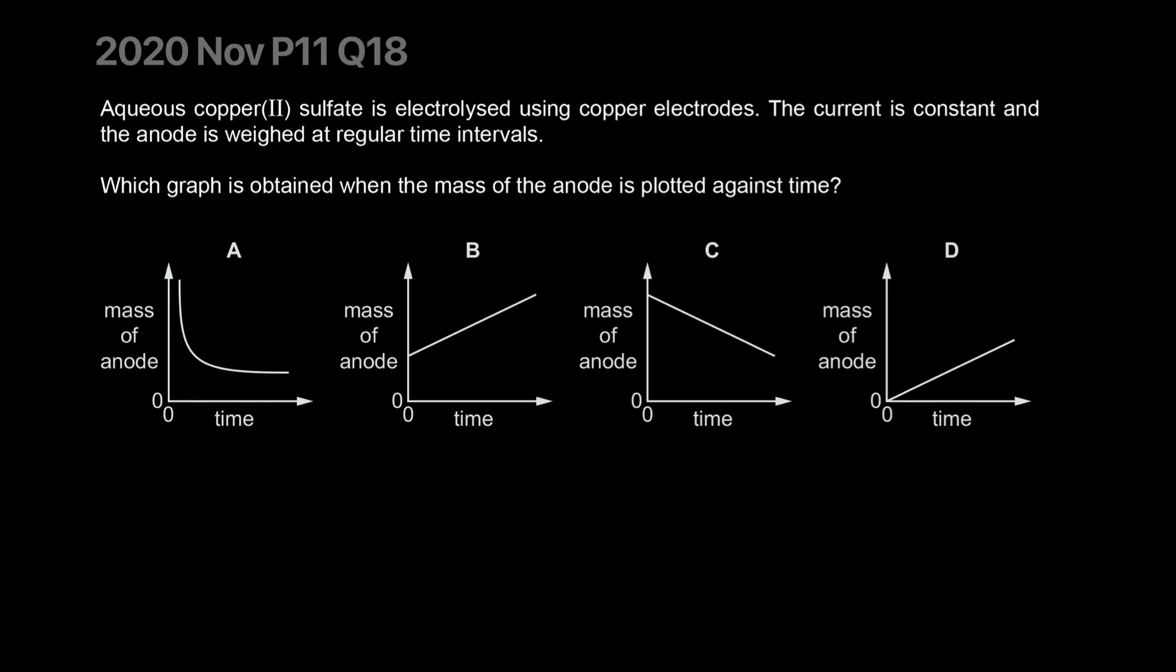Copper sulfate is electrolyzed using electrodes, the current is constant, so the flow of electrons is constant, so the anions produced or lost is going to be constant, right? Metal lost or metal produced, I should say. Which graph is obtained when the mass of the anode is plotted against time? The anode has a loss of electrons, so what happens is copper in the anode will turn into copper ion, so it'll dissolve, so the anode will lose mass. So it's either A, because that's losing mass, and C is losing mass, but it's going to be consistent. It's not a rate equation. It's going to consistently lose mass because the electrons are dictating how it works, and your current supply is constant, so C is the right answer.